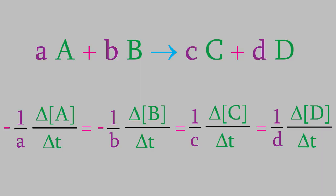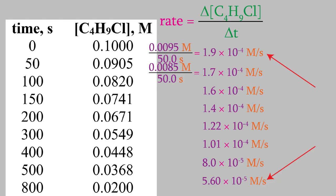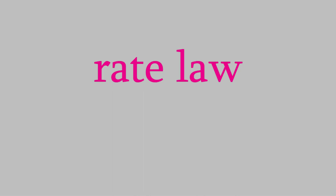In the last video, we saw this equation — the general formula for determining the rate of a reaction. We divide the change in the concentration of a reactant or product by the time that elapses during the experiment, then divide by the coefficient of the compound in the balanced reaction. But as we saw, this gives us the average velocity, which can change depending on the concentration at the time we begin. So in order to understand how fast a reaction is, we need to understand the connection between the rate and the starting concentration. Fortunately, there is a way to do that — using what's called a rate law.